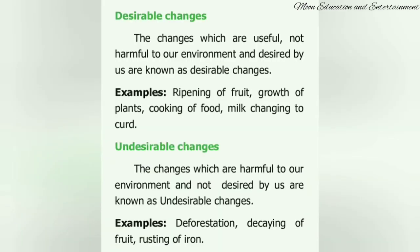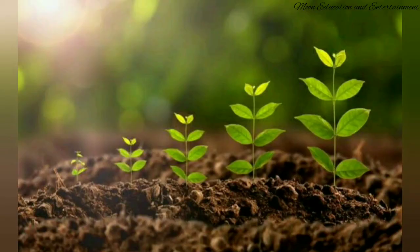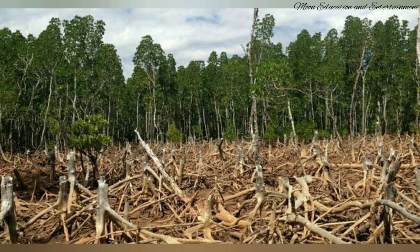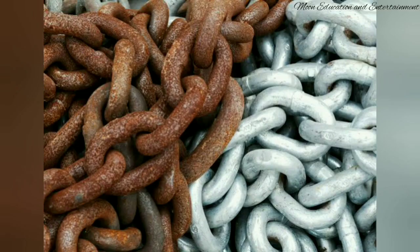Desirable changes and undesirable changes: changes which are useful and not harmful to our environment are considered desirable changes. Changes which are harmful to the environment and not desired by human beings are called undesirable changes. Desirable changes include ripening of a fruit, growth of a plant, and cooking of food. Undesirable changes include deforestation and rusting of iron, which are harmful to our environment.